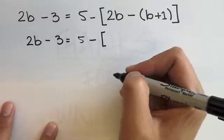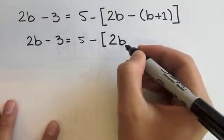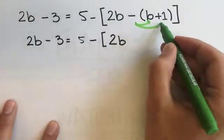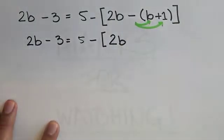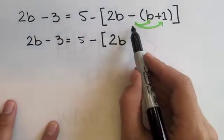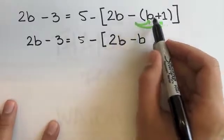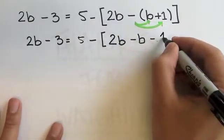In the first step, you want to leave the bracket exactly the same because the distributive property you're going to be performing first is the one of the parentheses on the inside. This negative times b gives you negative b, and this negative times positive 1 gives you negative 1.